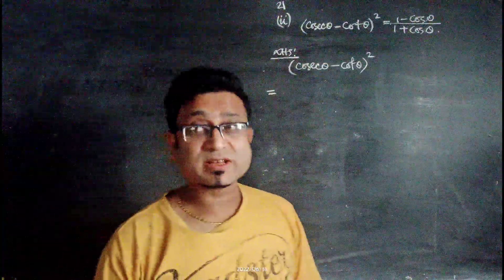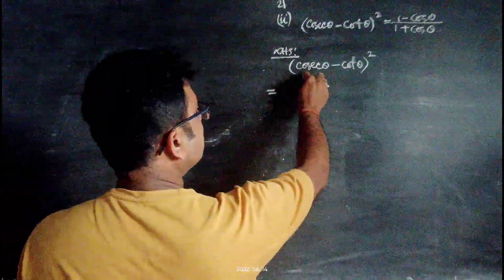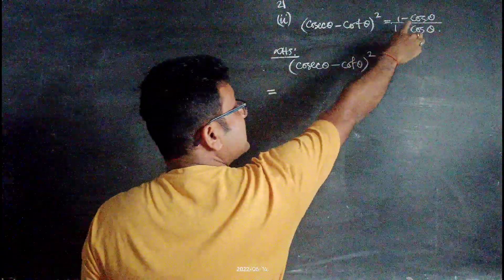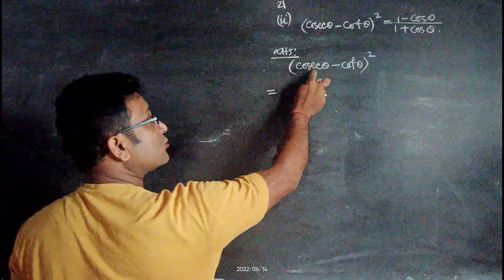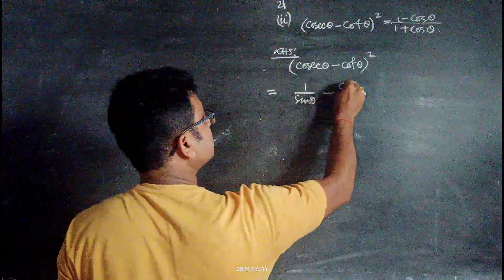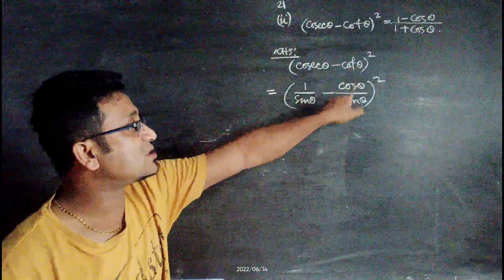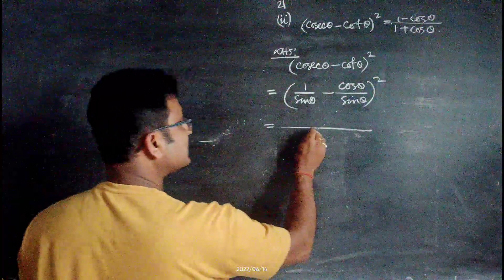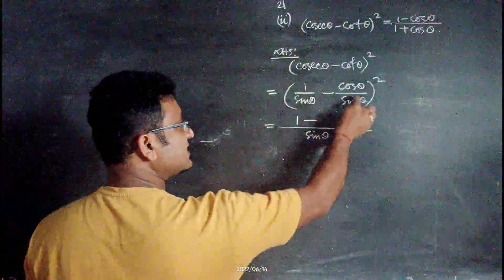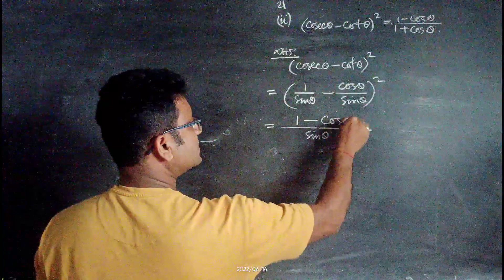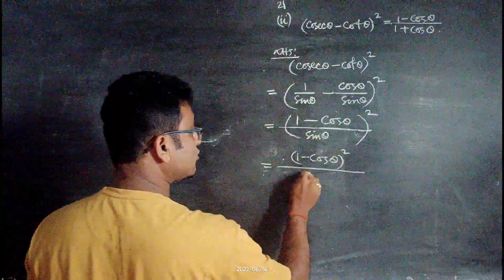Second part of question 21: (cosecθ - cotθ)² = (1 - cosθ)/(1 + cosθ). Since the right-hand side is in terms of cosθ, instead of applying the (a-b)² formula we write cosecθ as 1/sinθ and cotθ as cosθ/sinθ. So it becomes (1/sinθ - cosθ/sinθ)² = ((1 - cosθ)/sinθ)². This gives (1 - cosθ)² / sin²θ.